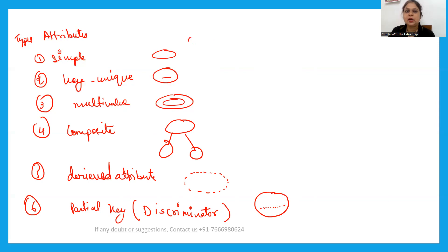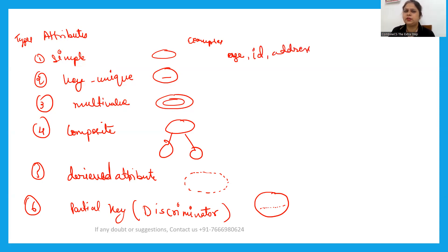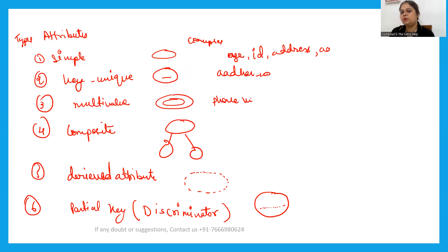For examples: a simple attribute could be age, ID, or address. A key attribute example would be an Aadhaar number — it cannot be repeated and uniquely identifies a student. A multi-value attribute means one entity has multiple values for that attribute; for example, a phone number where one person has two numbers — a personal number and an official number. That gives two values, making it multi-value.